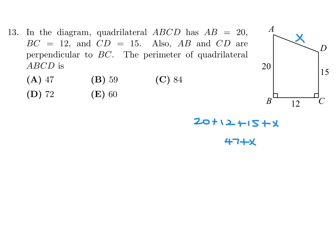So how do I figure out X? Well, I'll draw a perpendicular there, and then that is 12. It's the same as the bottom. And then from here to here, that's going to be 20 minus 15, so that's 5. And then that's 5 squared plus 12 squared equals X squared, Pythagorean relationship. And when you solve that, you'll get 13. So therefore, 47 plus 13 is 60. And number 13, therefore, is E.